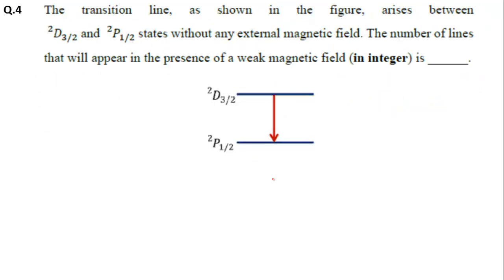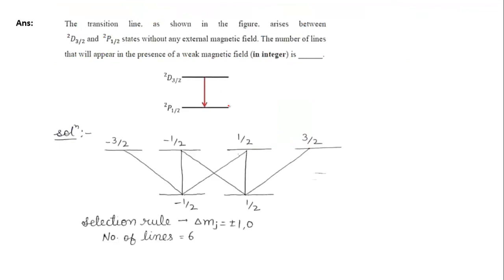Question 4: The transition line arises between 2D3/2 and 2P1/2 states without any external magnetic field. The number of lines that will appear in the presence of a weak magnetic field is asked. This was a very easy question from the atomic and molecular physics portion of GATE. We need to find the splitting of 2D3/2 and 2P1/2 under a weak magnetic field.